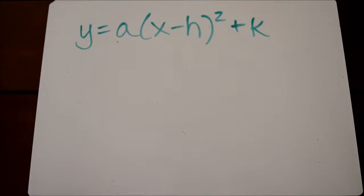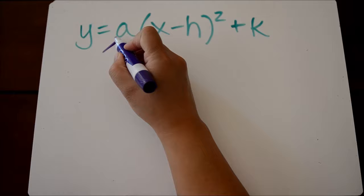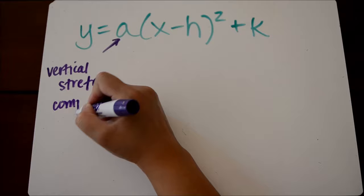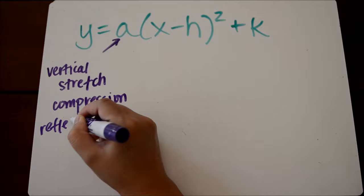Different parts of this equation will tell you transformations. The a value will tell you whether you have a vertical stretch or compression, and it will also tell you if your graph has been reflected across the x-axis.